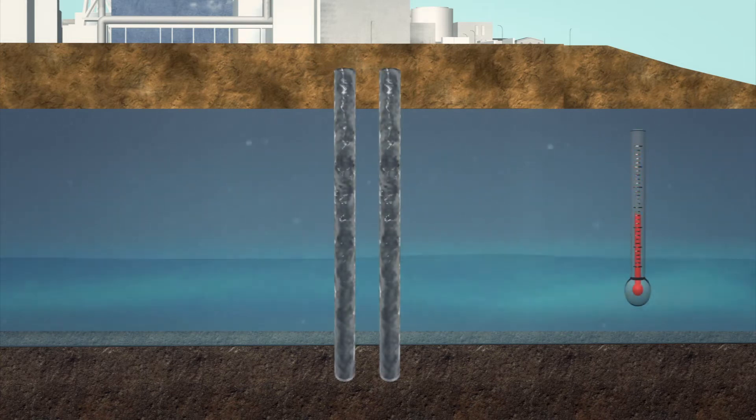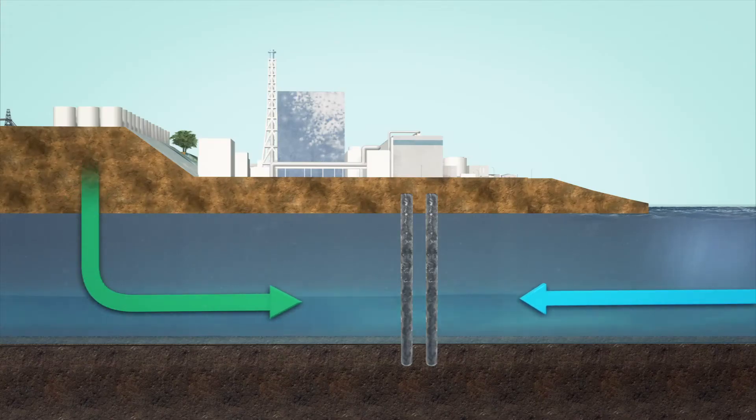This will create a wall of ice that will stop radioactive water from flowing out and prevent groundwater from flowing in.